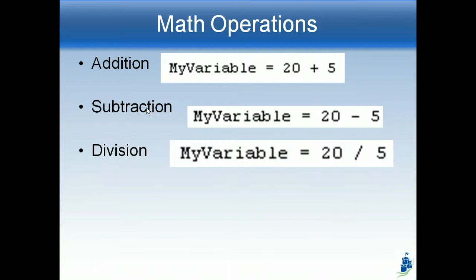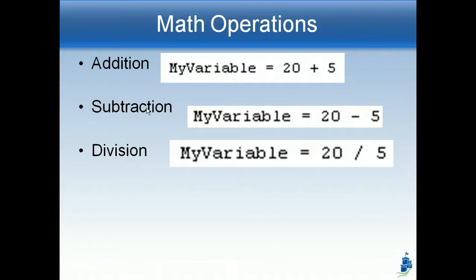Division, for that, we use a slash, just like you would do anywhere. That just kind of turns it into a fraction. For this one, 20 divided by 5 is 4, and so my variable would be equal to 4.